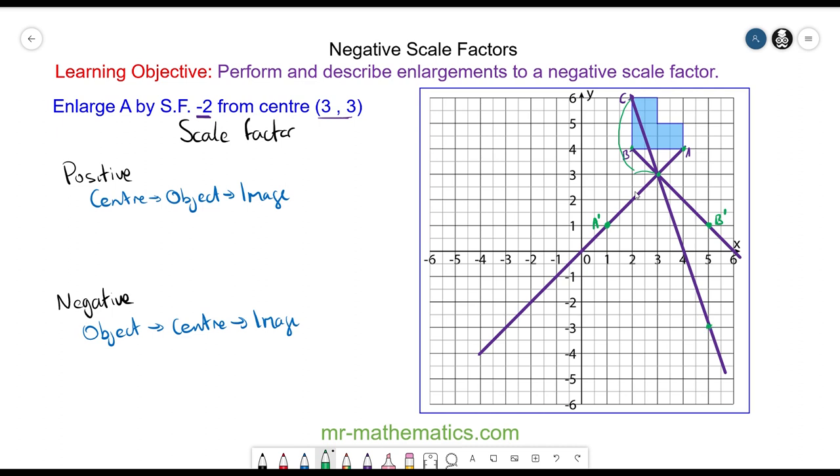Now I'm going to recreate the line A to B on the image and we can check this is right because on the object the line is 2 units and on the image the line is 4 units.